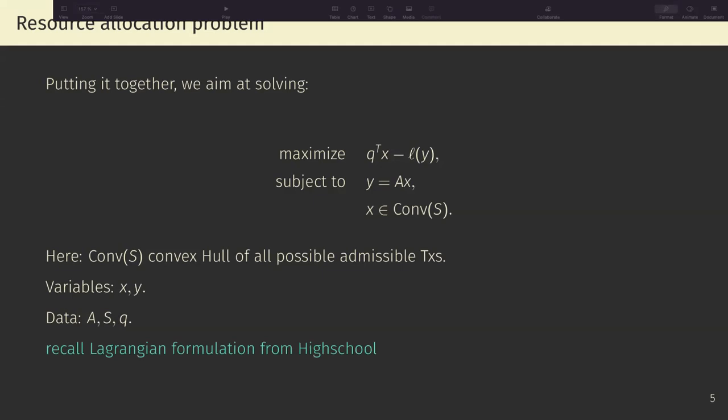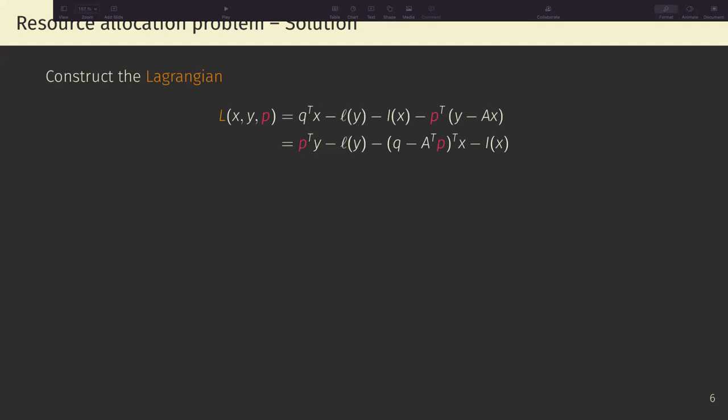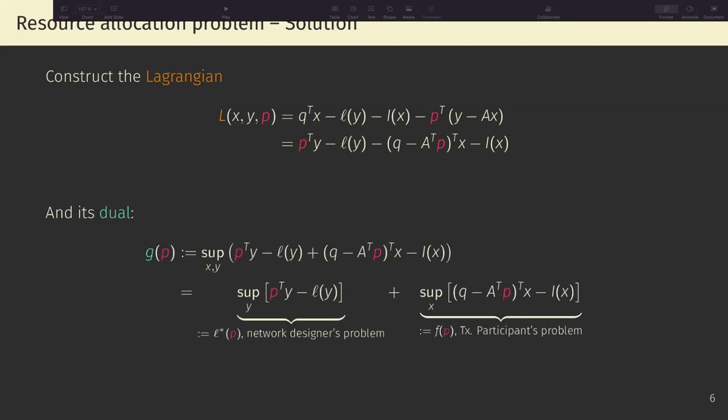So how do we optimize this? Well, if you recall from high school or first years of college, this is a constrained optimization problem. So one of the best ways of solving it is to formulate it as a Lagrangian problem. And if we do that, then we get something that looks like this. So, we can define the Lagrangian as this first line here, where this I of X is an indicator function that says that X is in the set that we need. And this P transpose Y minus AX symbolizes the constraint of the expenditure. Furthermore, we can move things around a little bit in this equation and obtain the formula below.